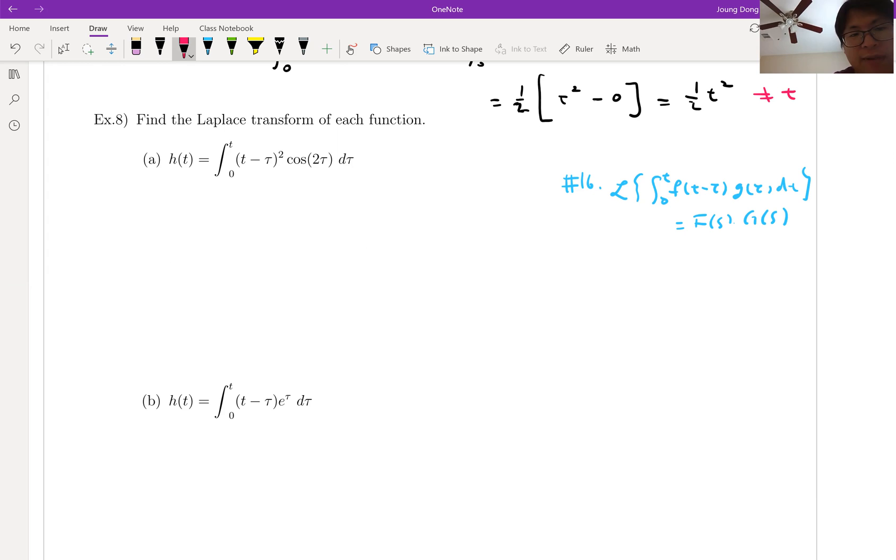There is t minus tau that is really concerned with this part. Then we can assume this part is t, the t minus tau part. Can you see my pointer? This part is concerned with function f.